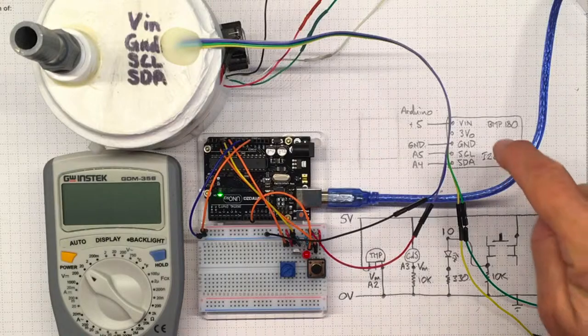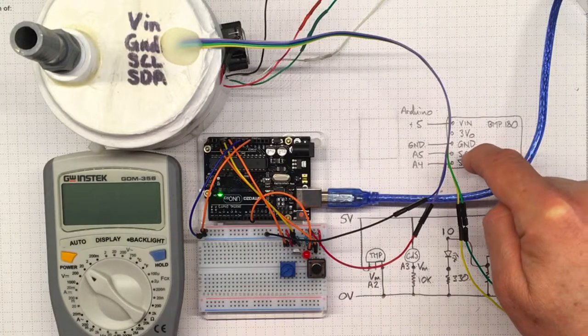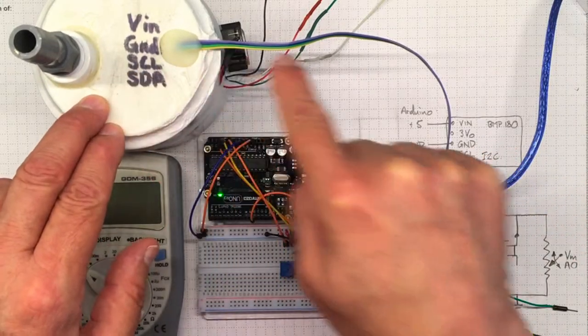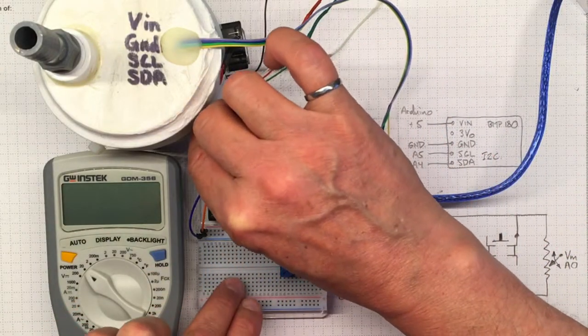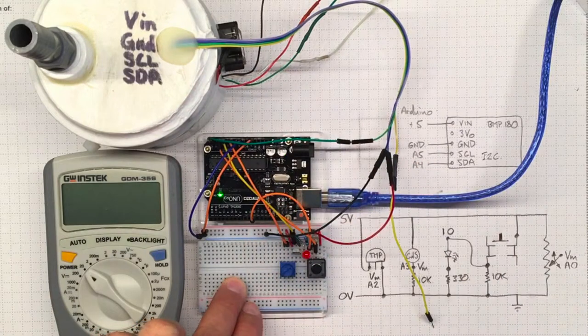Now the SCL line, that is the next one, that's the green line. So this green one, I'm going to plug into A5. That's the last analog pin in the row.